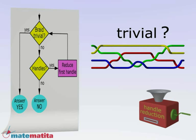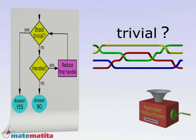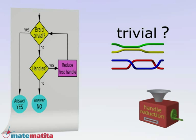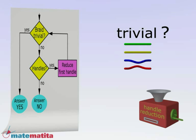Continue like this until there are no more handles. If the braid is not trivial, the answer is no. If, after reducing all the handles, the braid is trivial, then the answer will be yes.